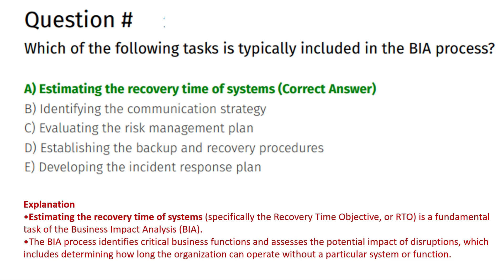The next question is: which of the following tasks is typically included in the BIA process? Option A: Estimating the recovery time of systems. Option B: Identify the communication strategy. Option C: Evaluating the risk management plan. Option D: Establishing the backup and recovery procedures. Option E: Developing the incident response plan. The correct answer is Option A, estimating the recovery time of systems. Estimating the recovery time of systems — specifically the Recovery Time Objective or RTO — is a fundamental task of the Business Impact Analysis. The BIA process identifies critical business functions and assesses the potential impact of disruptions, which includes determining how long the organization can operate without a particular system or function.